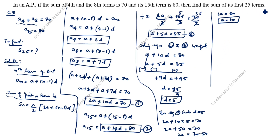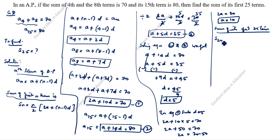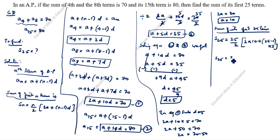Now we will find the sum of the first 25 terms using the formula SN equals n by 2 times (2A plus (n minus 1) into D), where n is 25. So S25 equals 25 divided by 2, times (2 into 10 plus (25 minus 1) into 5), which is 25 by 2 times (20 plus 24 into 5).